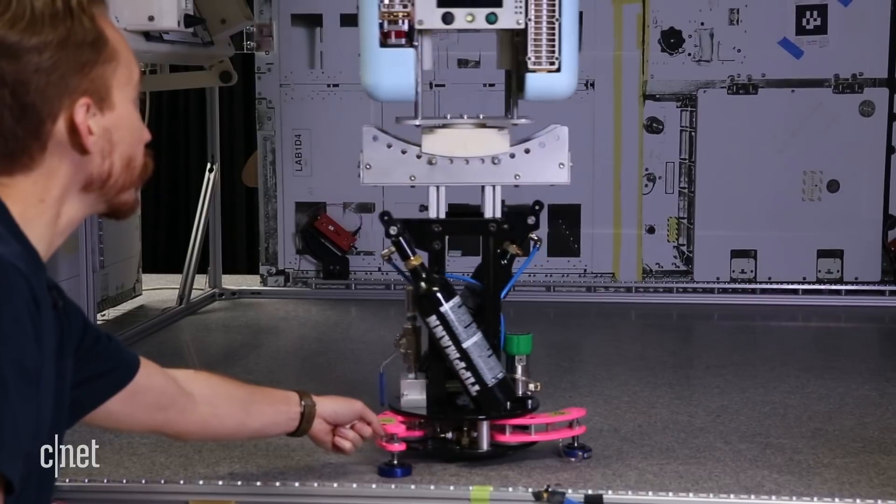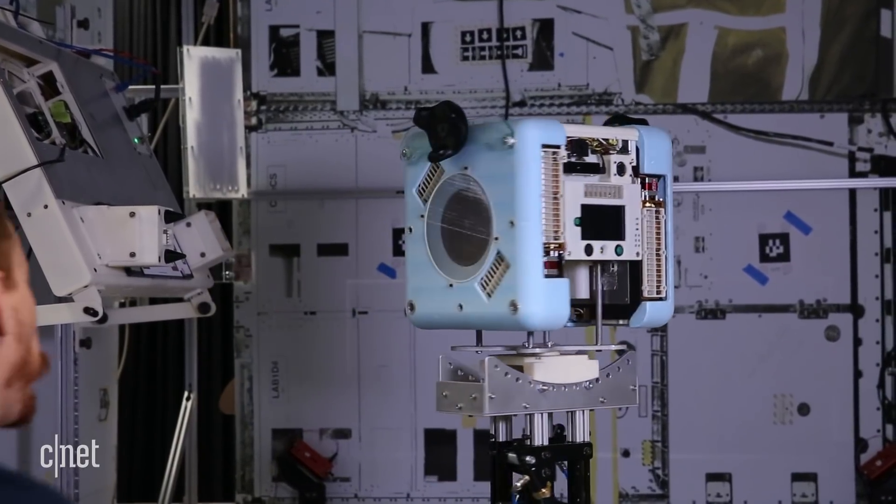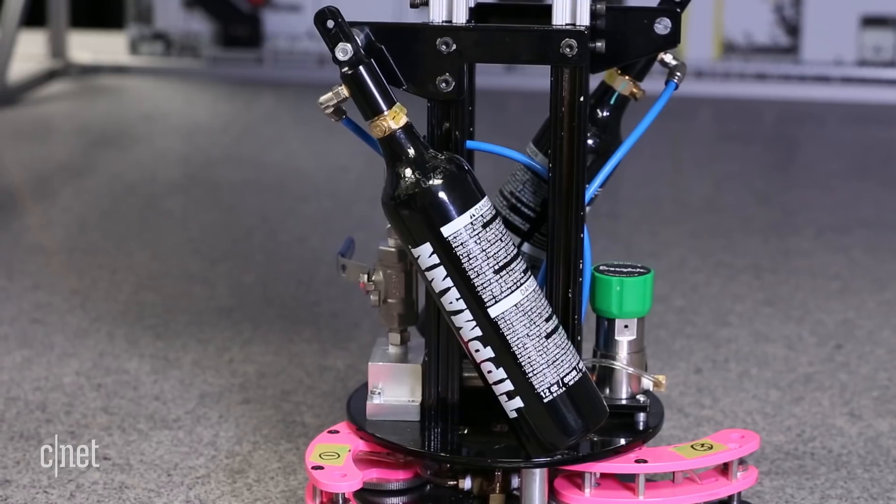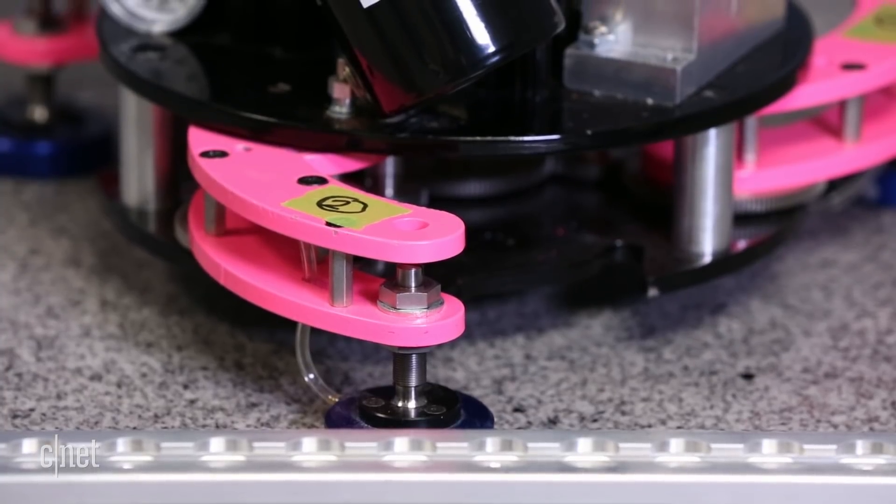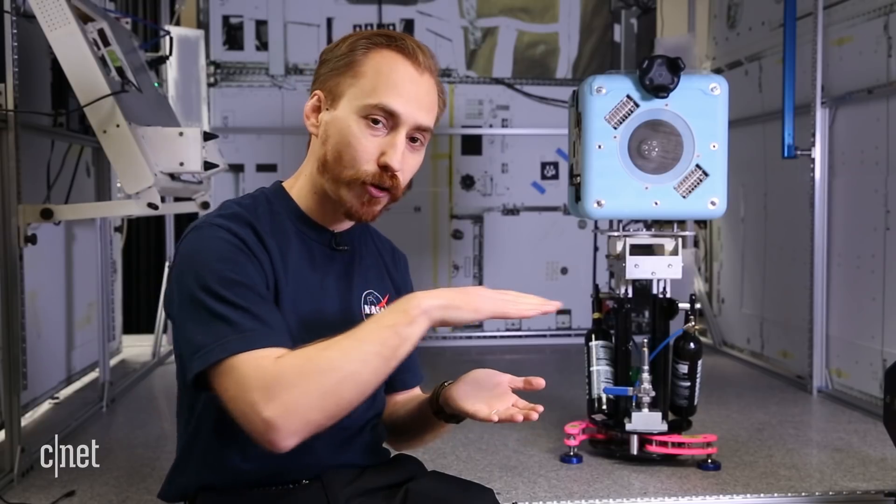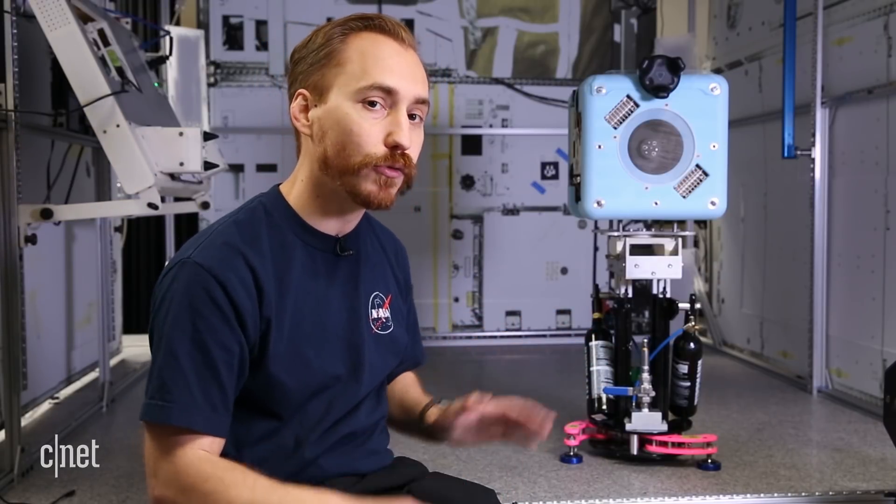What you see here is an air carriage holding an Astro-B prototype on the top. We have CO2 cartridges here that send out compressed CO2 between the air carriage and this table, creating a little cushion of air that it floats on top of. It can move anywhere on this table with almost no friction.